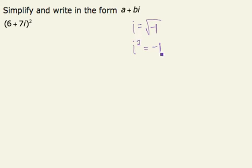This will be important information for this problem. 6 plus 7i squared is really 6 plus 7i times 6 plus 7i.